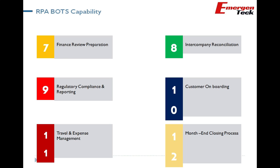Travel and expense management is also a critical use case — as employees we claim reimbursements for travel and food expenses, which consumes a lot of bandwidth, making it a good candidate for RPA automation. Last but not least is the month-end closing process, which is very critical for the finance department. People are often busy working late hours and even on weekends to complete this activity.